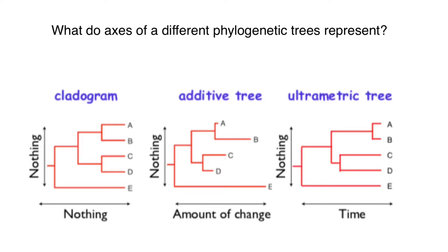Hello and welcome to Nikolai's genetics lessons. Today is going to be a very short video in which I'm going to explain the difference between different phylogenetic trees. You see here three phylogenetic trees which show the relationship between these species — same species but three different phylogenetic trees.